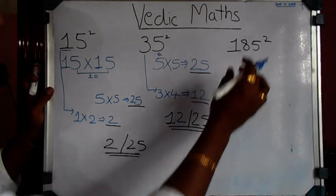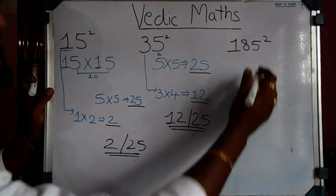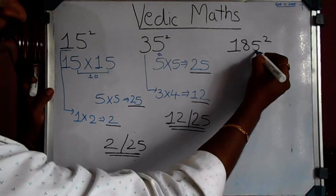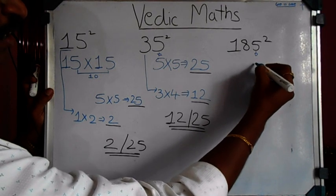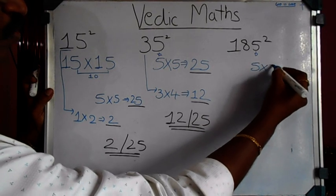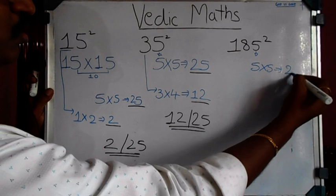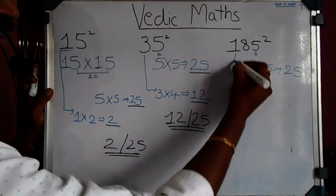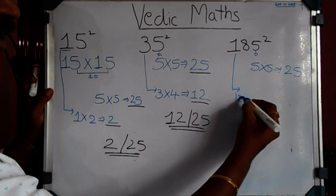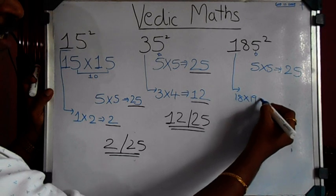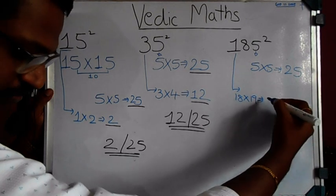Let's try a bigger number: 185 square. Take 5 into 5 to get 25, and then 18 multiplied by the number ahead, which is 19. You will get 342.